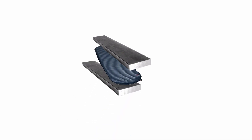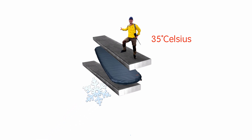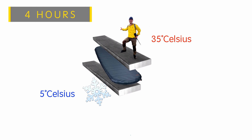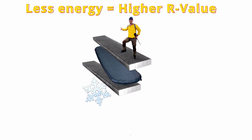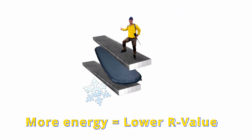So let me go through how this R value standard is tested. In the testing, pads are sandwiched between a hot plate on top, which is about 35 degrees Celsius — this mimics the body — and a cold plate at the bottom, which is about 5 degrees Celsius, mimicking the ground. Over the course of four hours, testers measure how much energy the top plate uses in order to stay at a consistent 35 degrees Celsius. The less energy it takes, the more insulated the pad is. The more energy it takes, the less insulated the pad is.